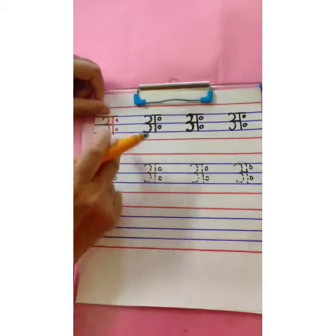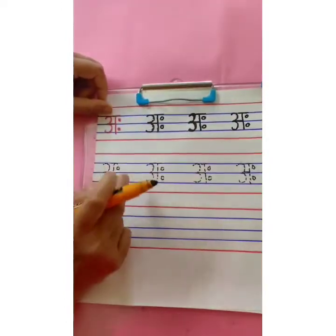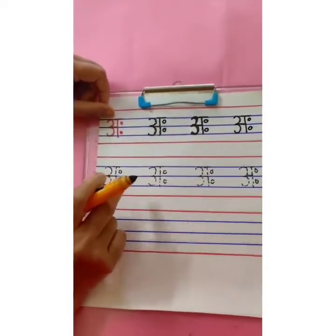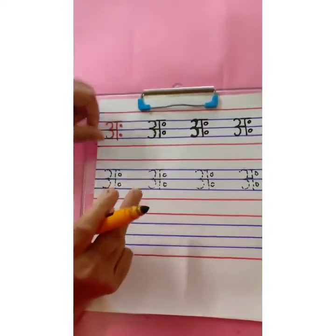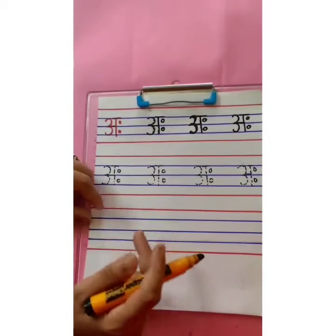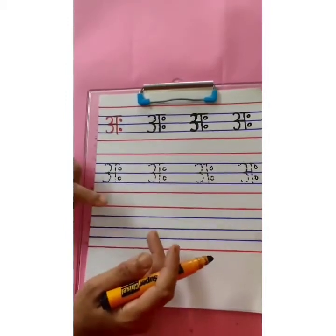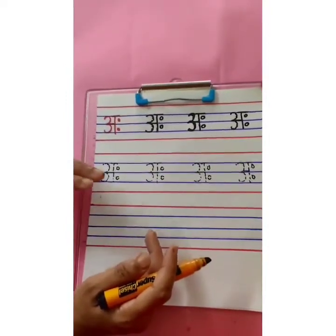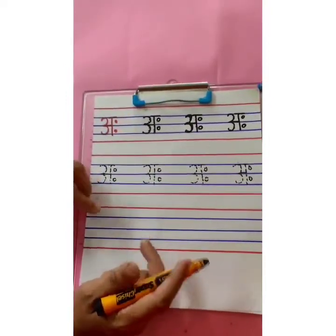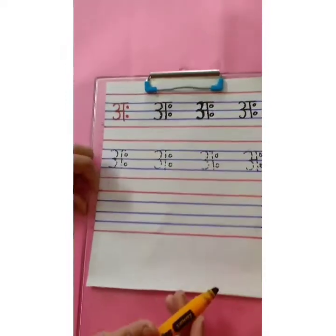This way we are going to complete two rows by tracing the dots, and then the remaining page we are going to write independently.